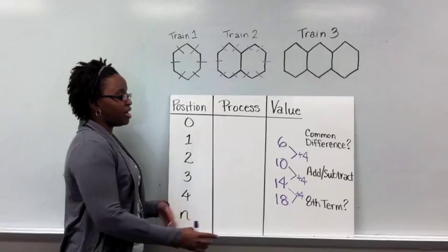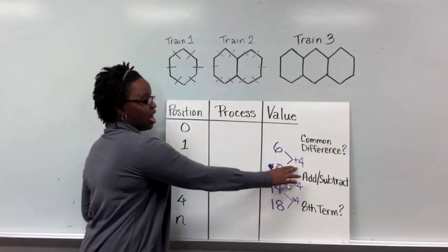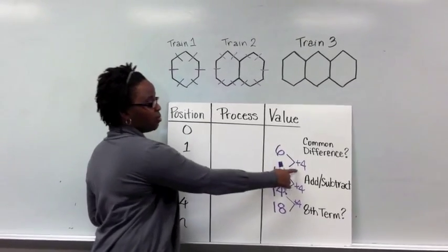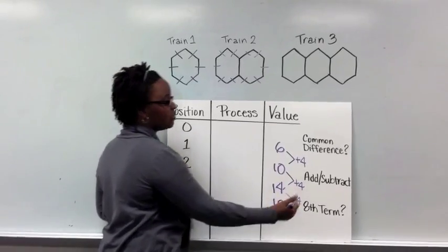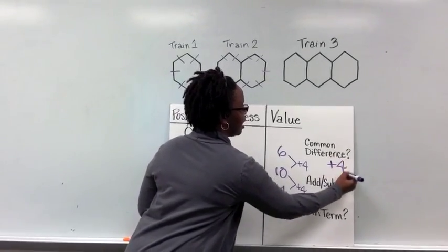So when we go to find the process, we want to take that common difference that we've got. The common difference of the pattern is every single time we're adding 4.